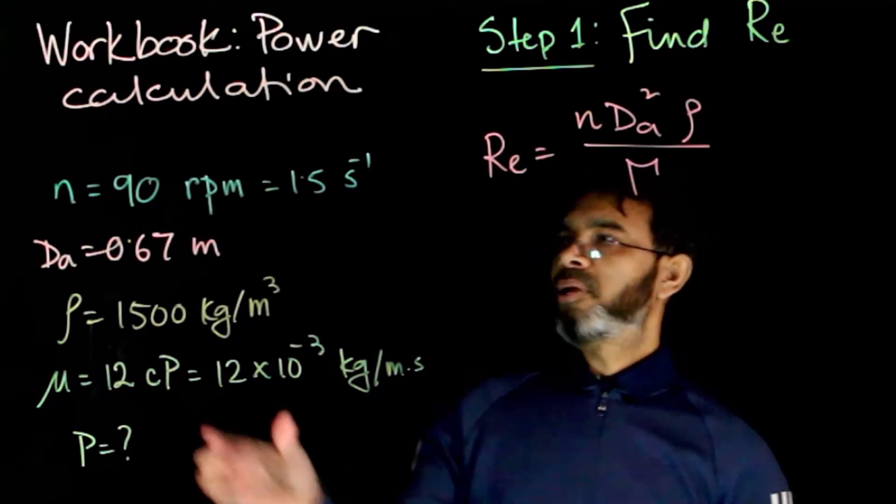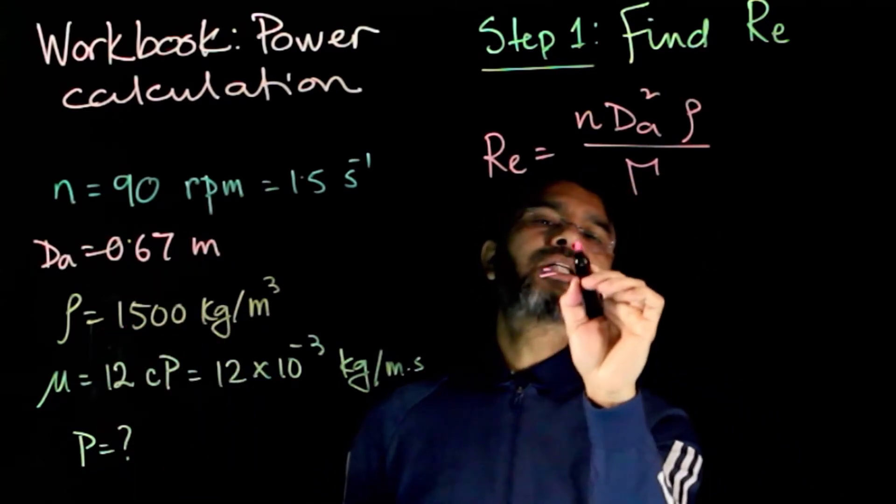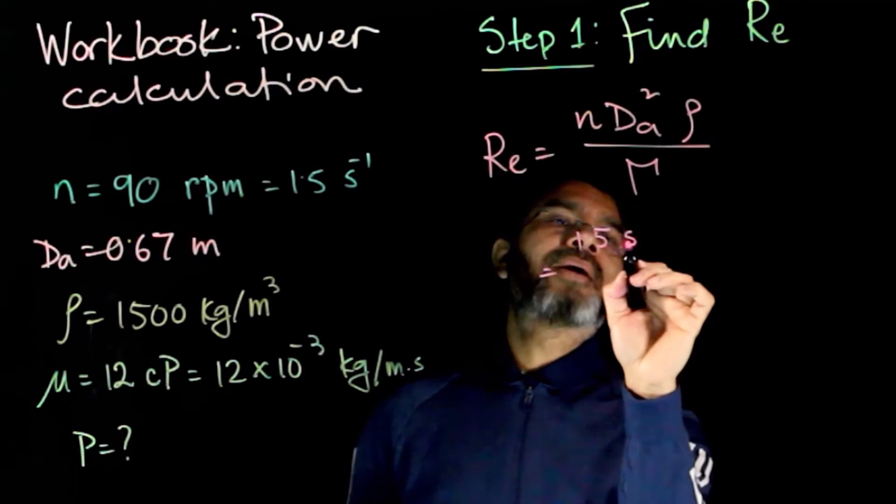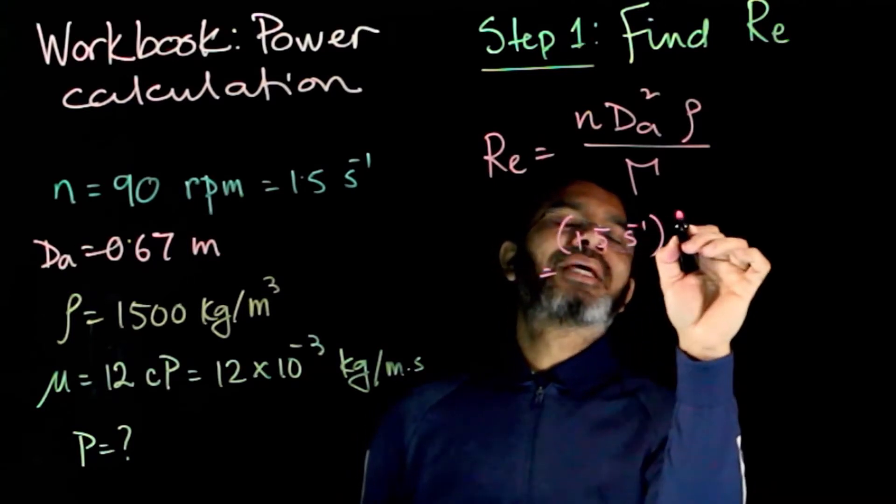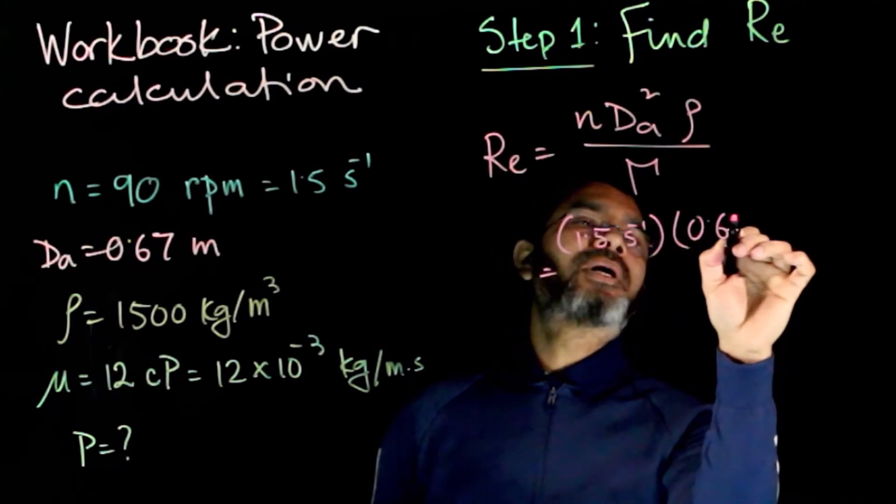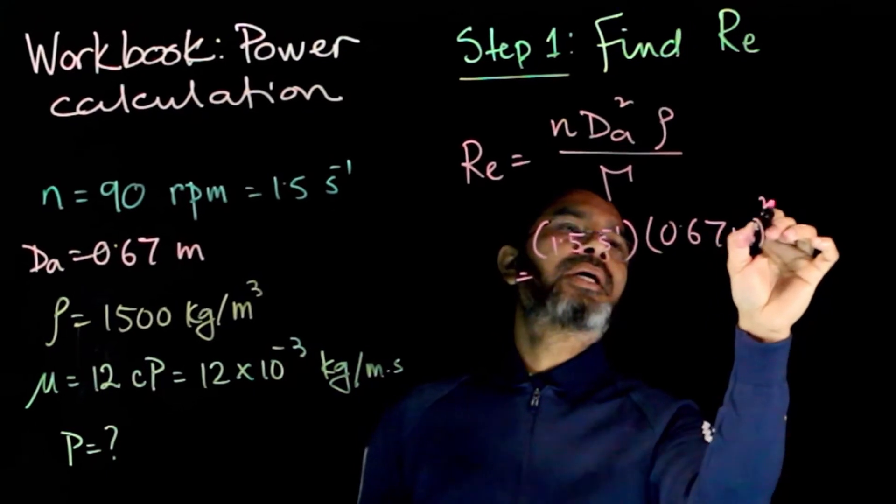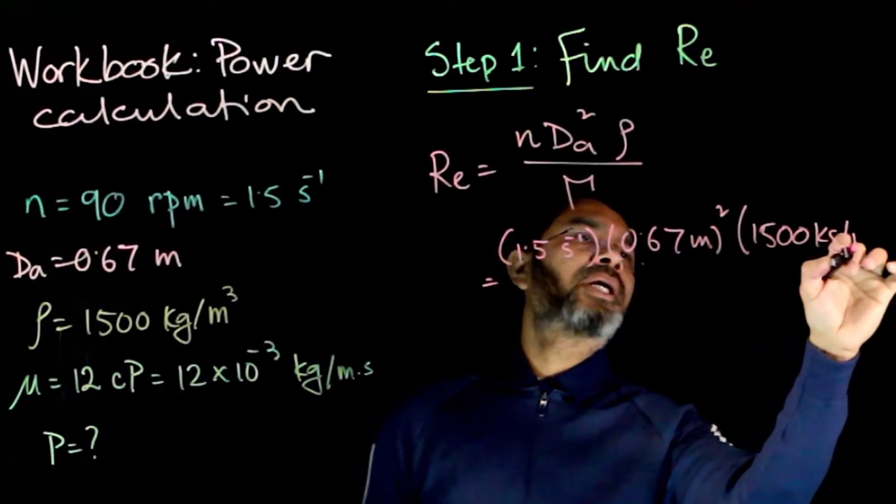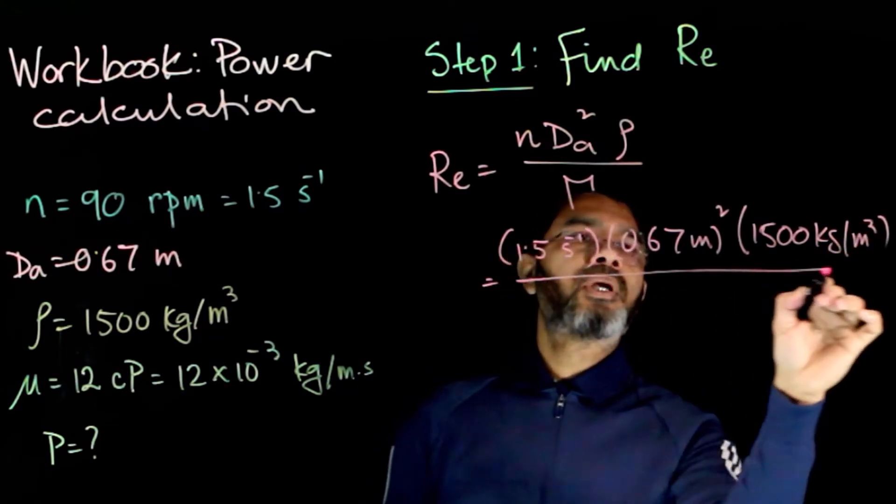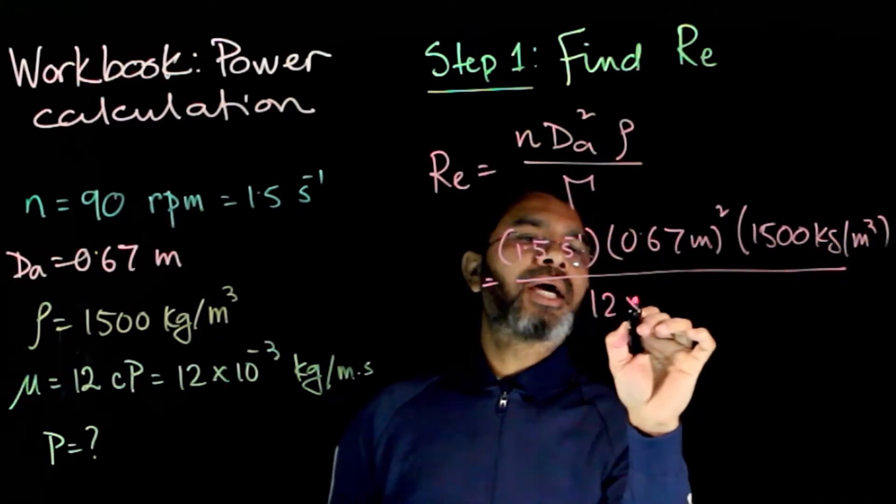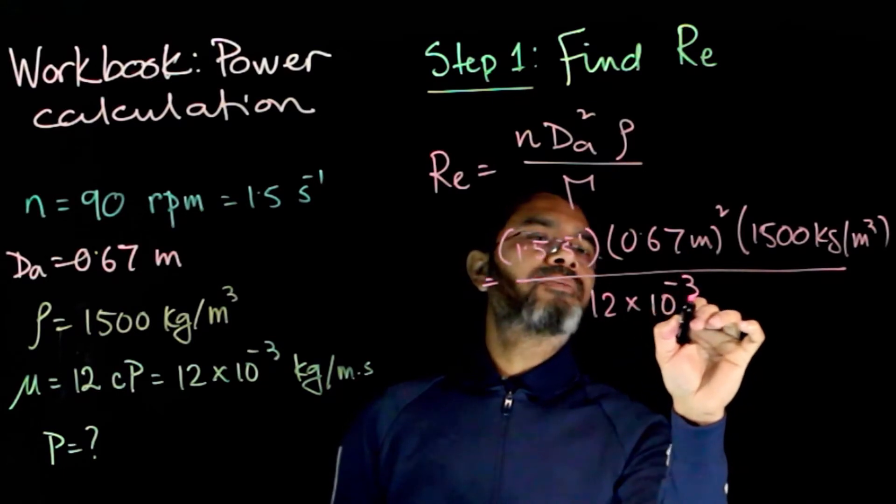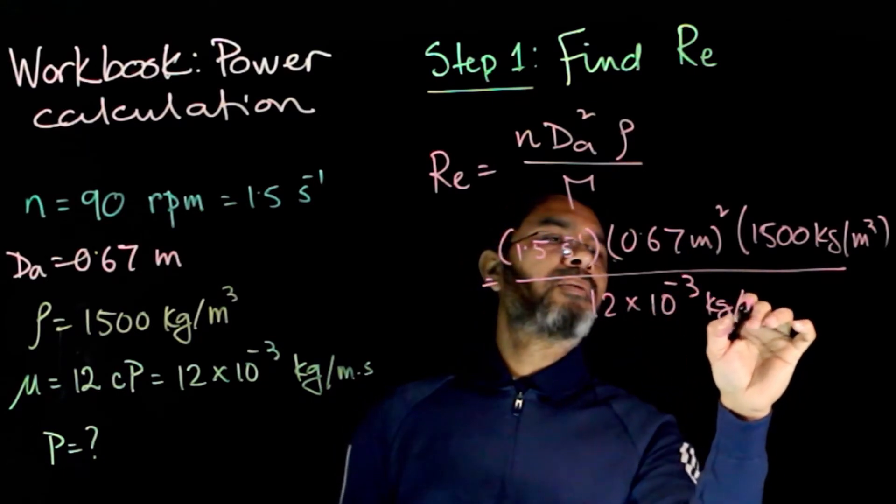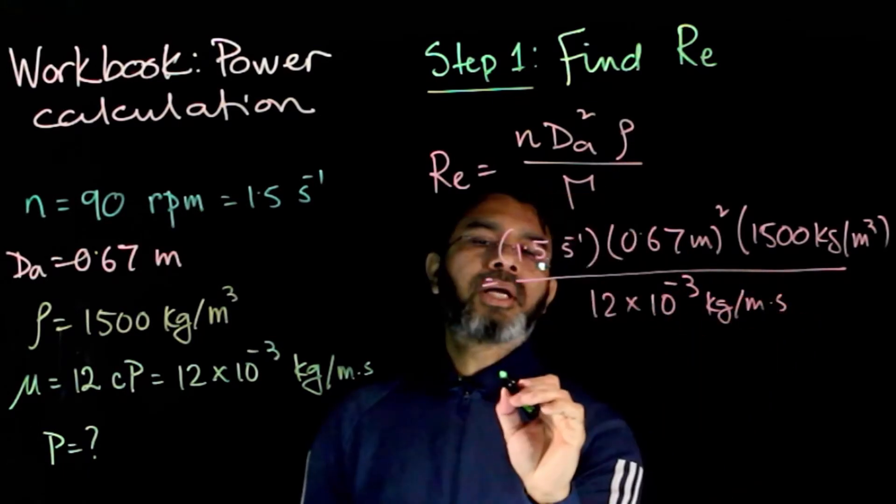Simply plug in all these values: n = 1.5 s⁻¹, DA = 0.67 m squared, ρ = 1500 kg/m³, and μ = 12 × 10⁻³ kg/m·s.